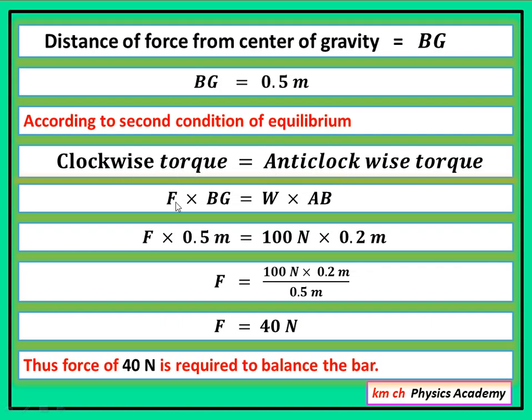Clockwise torques is F times BG and anti-clockwise torques is W times AB. So putting the values, F we have to find, BG is 0.5 meter, W is 100 newton and AB is 0.2 meter. So this 0.5 meter is multiplying here so it will go to the other side and divide.